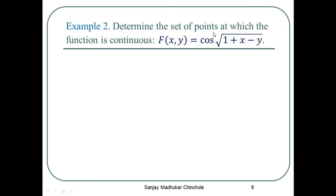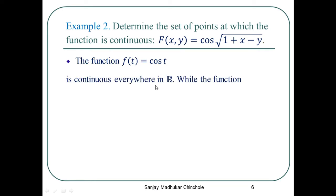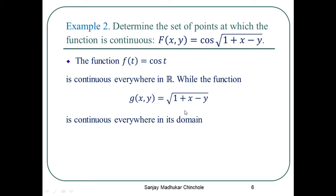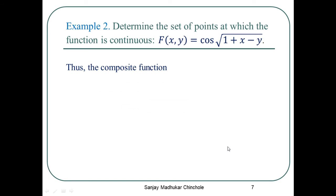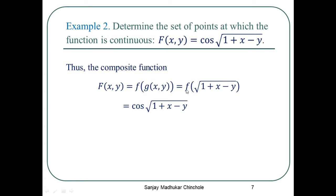Example 2: Determine the set of points at which the function is continuous. The function is given to be f(x,y) = cos(√(1 + x - y)). We know that the function f(t) = cos(t) is continuous everywhere on the real line. The function g(x,y) = √(1 + x - y) is also continuous everywhere in its domain, which contains all ordered pairs (x,y) of real numbers for which the expression inside the square root is greater than or equal to 0. So the composite function F(x,y) = f(g(x,y)) = cos(√(1 + x - y)).